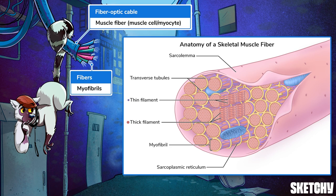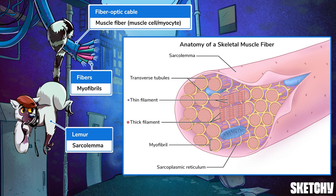And this lemur wrapped around the cable symbolizes the sarcolemma — the specialized cell membrane that surrounds each muscle fiber. What's he looking at?